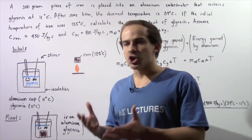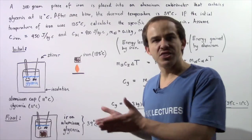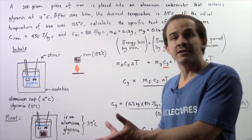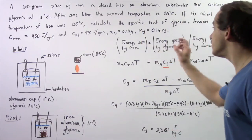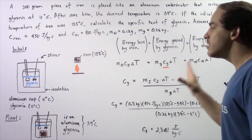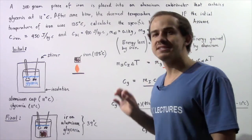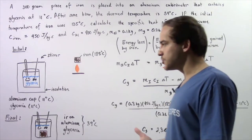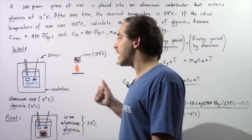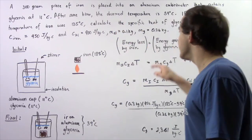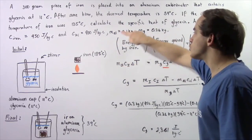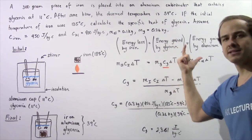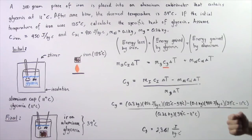Notice that the temperature of the iron decreased, and that means energy was transferred out of the iron. That energy went into the glycerin and the aluminum, because the temperature of both of these substances increased. Because we have the conservation of energy and we're assuming no energy left our system, the energy lost by the iron equals the sum of the energy gained by the glycerin and the energy gained by the aluminum.